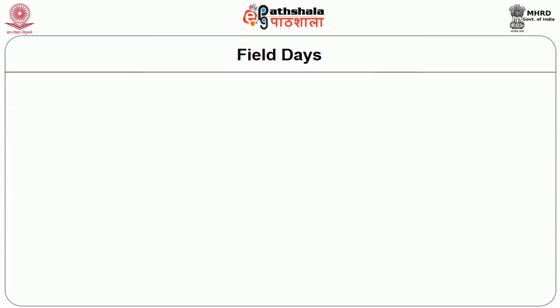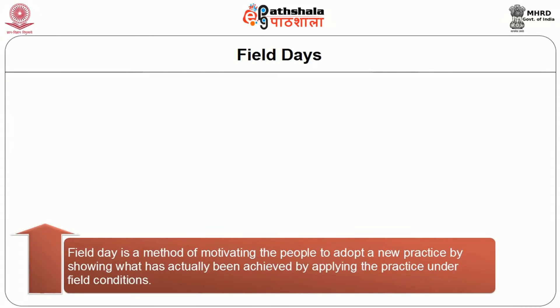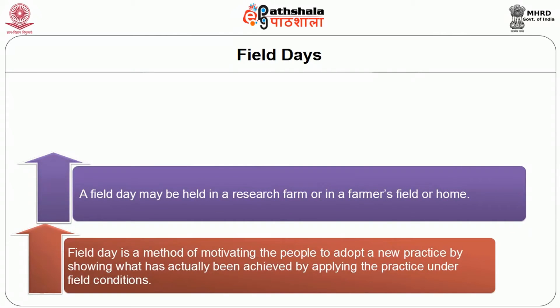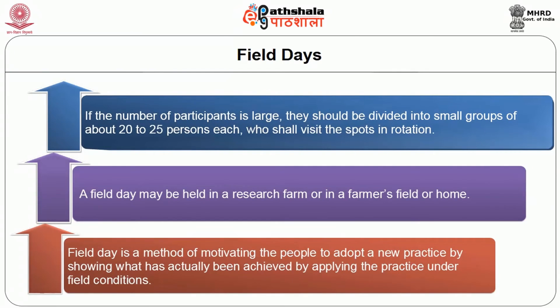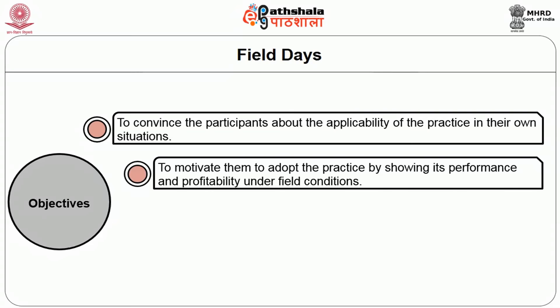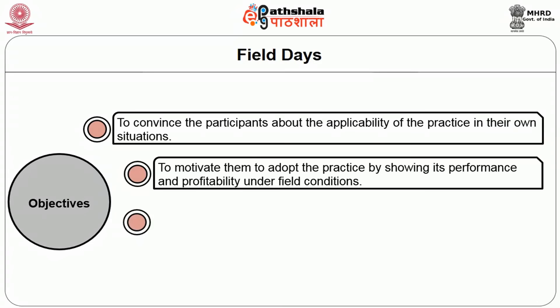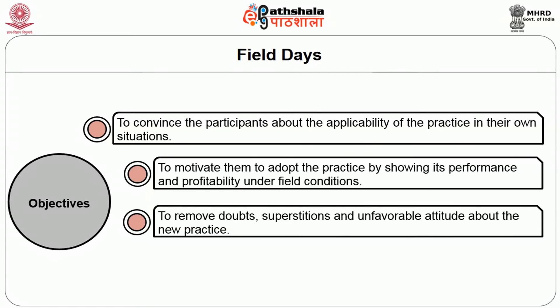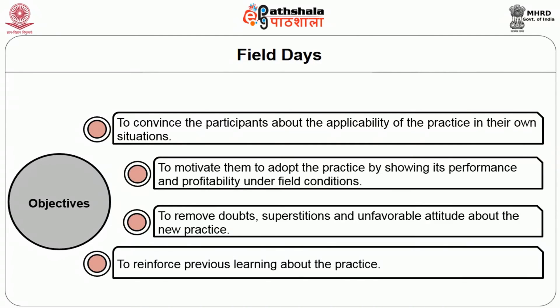Another method under group contact method is field days. The extension worker conducts various demonstrations and at times organizes field days to show results to many farmers, convincing and motivating them to adopt recommended practices. A field day is a method of motivating people to adopt a new practice by showing what has actually been achieved by applying the practice under field conditions. A field day may be held in a research farm or in a farmer's field or home. If the number of participants is large, they should be divided into small groups of about 20 to 25 persons each, visiting spots in rotation. The objectives of field days are: to convince participants about the applicability of the practice in their own situation; to motivate them to adopt the practice by showing its performance and profitability under field conditions; to remove doubts, superstitions and unfavorable attitudes about the new practice; and to reinforce previous learning about the practice.